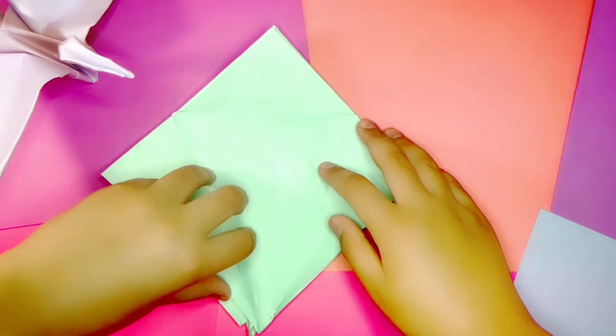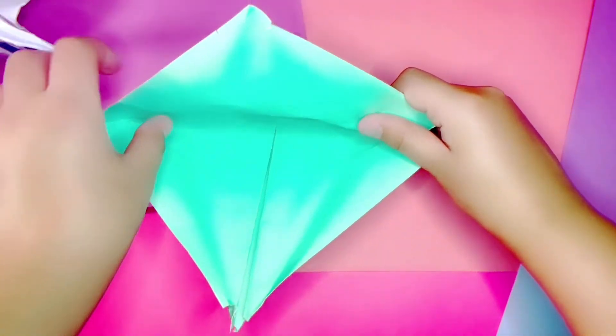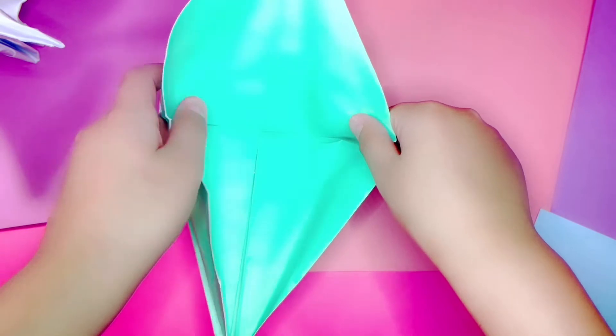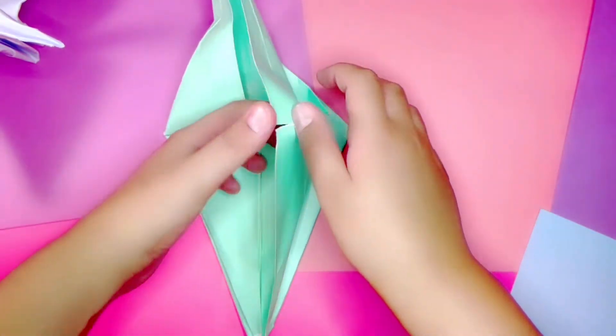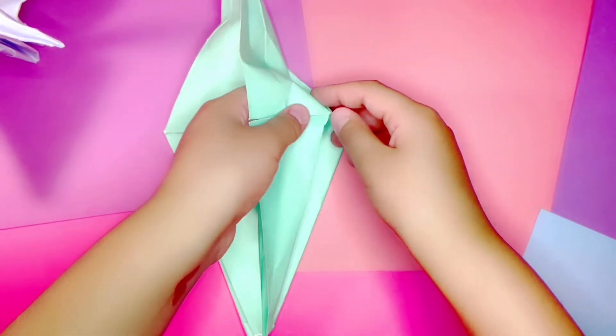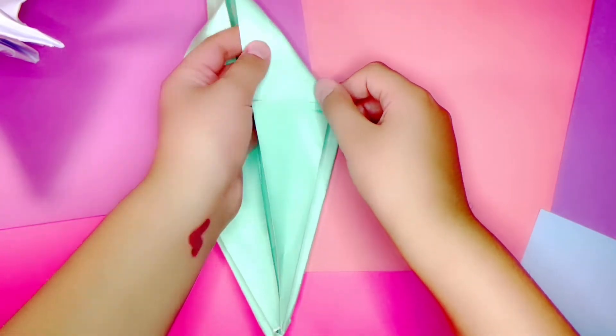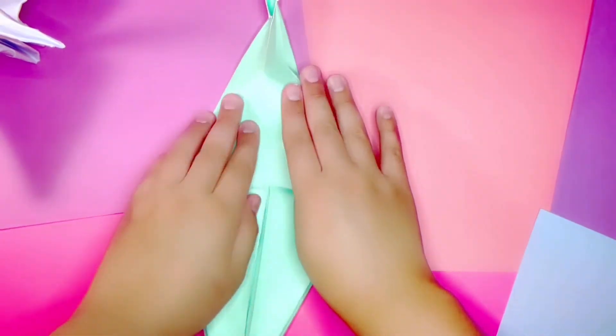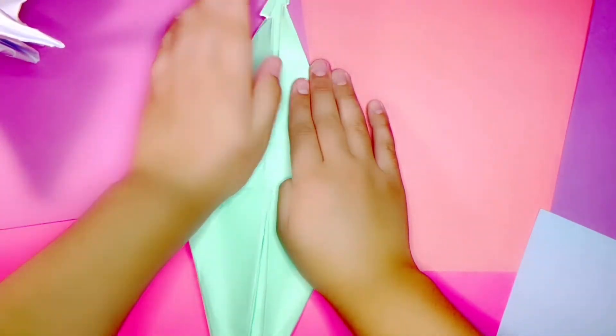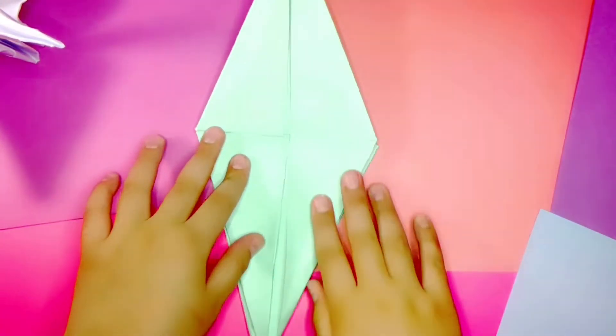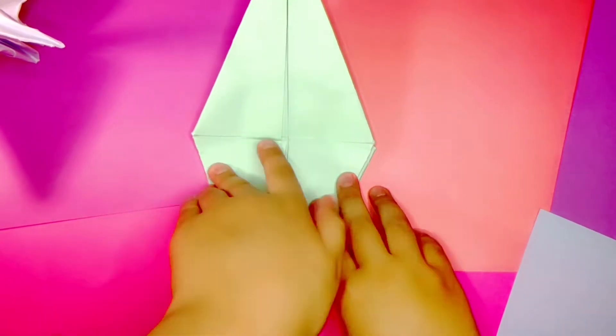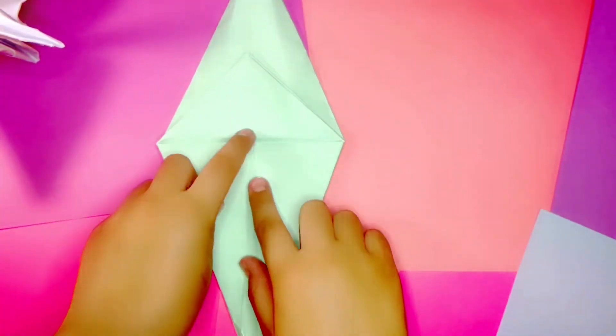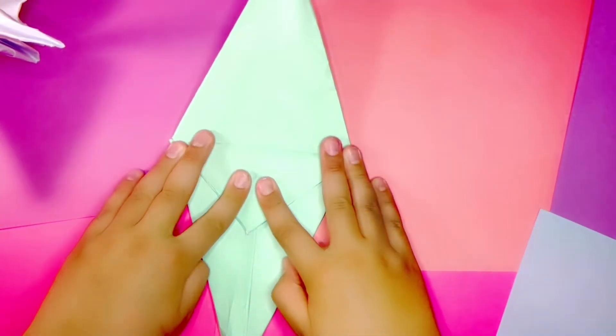Next is the diamond fold. Pull the corner up so it should open up the paper. Push the sides in so it should make the diamond fold. This part may be a little tricky so try your best. Press and repeat. Do the top fold and then the diamond fold.